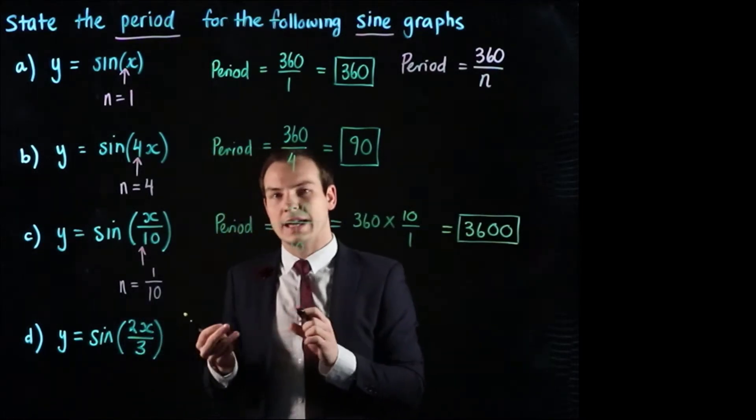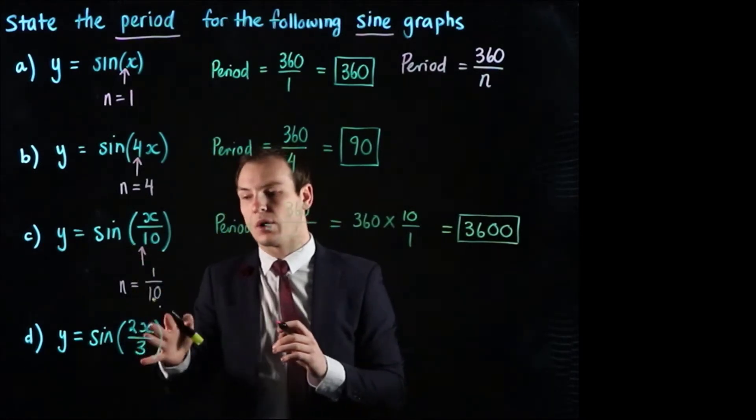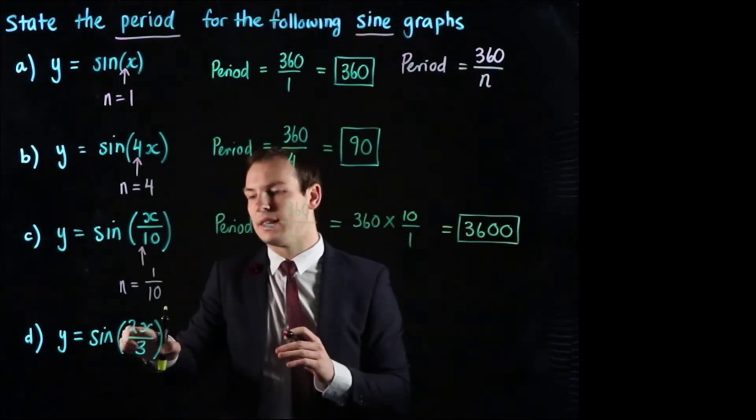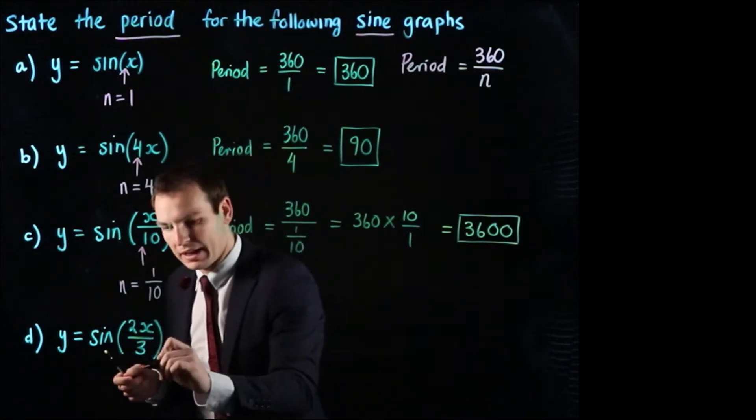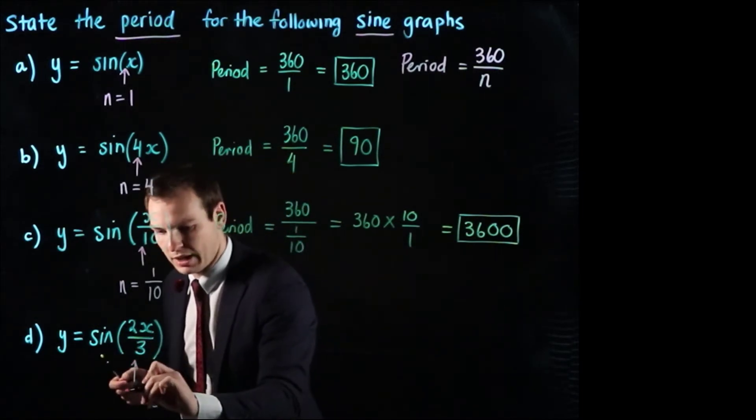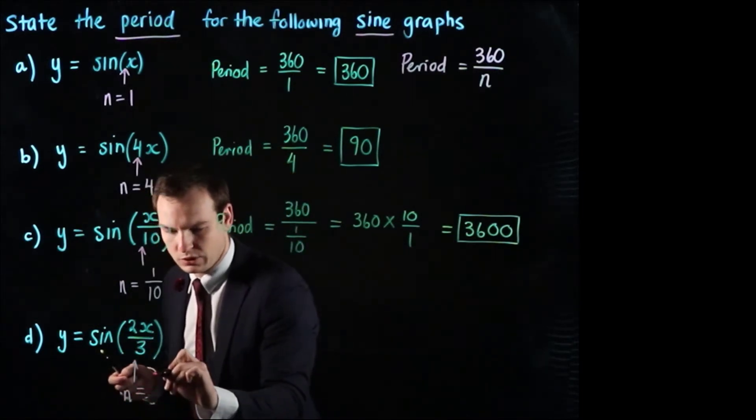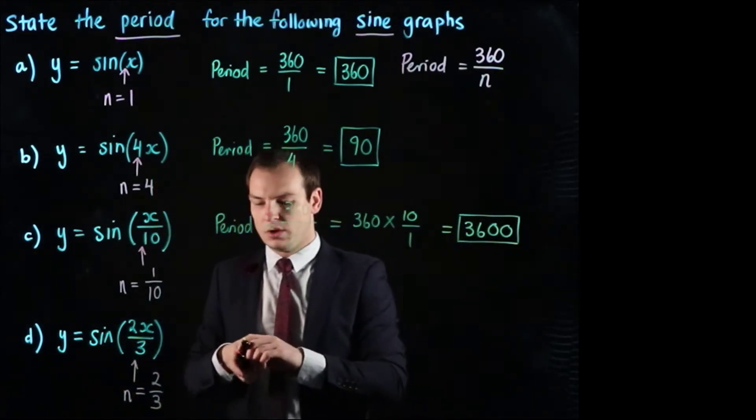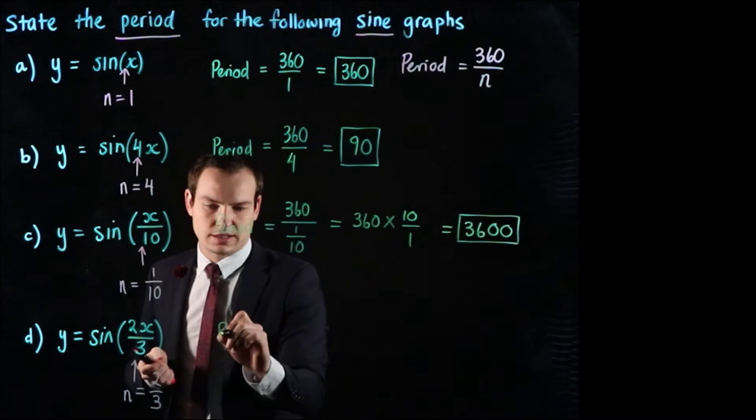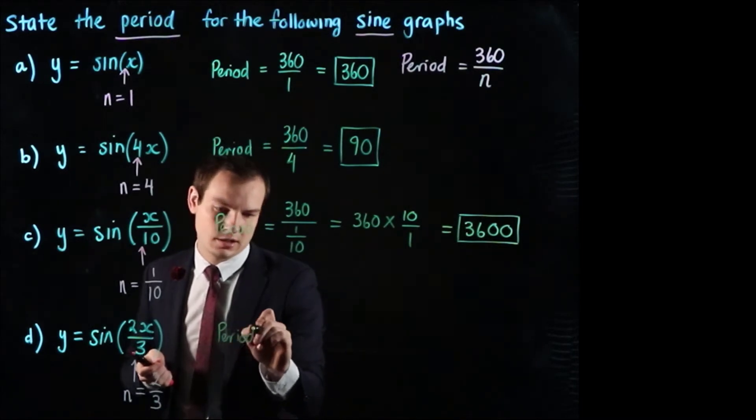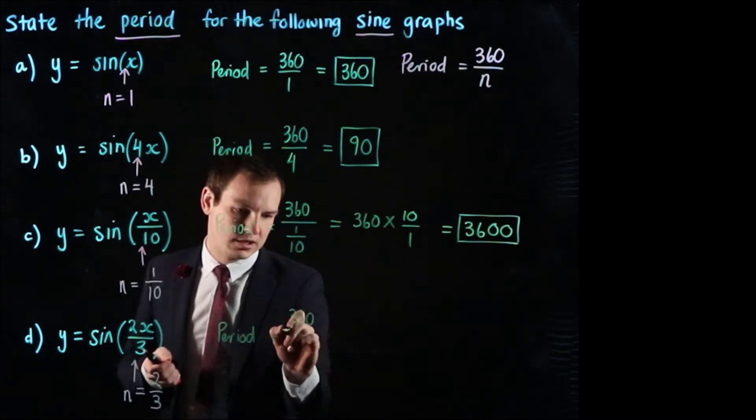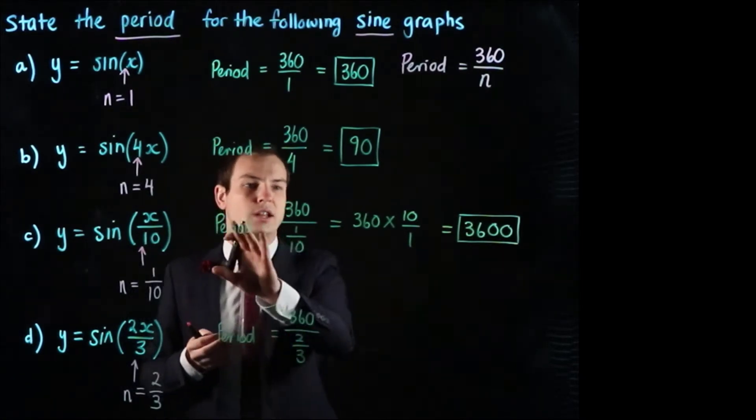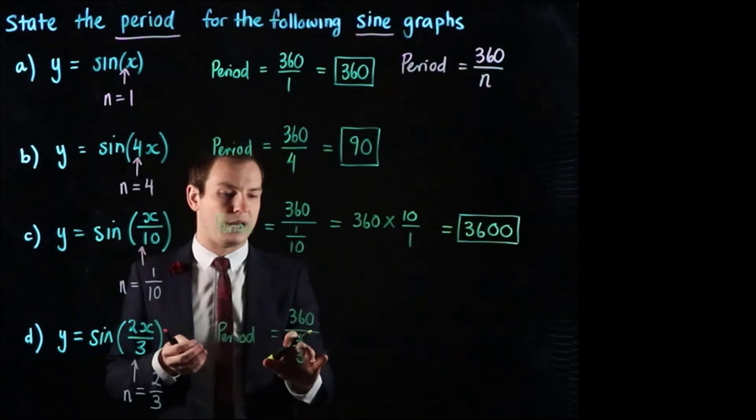For part d it's similar to part c in that we've got a fraction that's multiplying x. So a common mistake here would be just to say that n is 2 but it is in fact 2 over 3. So n is equal to 2 over 3 for this example which means that the period when we get to calculating that is going to equal 360 divided by 2 over 3 and now just like we did before we're going to multiply by the reciprocal.